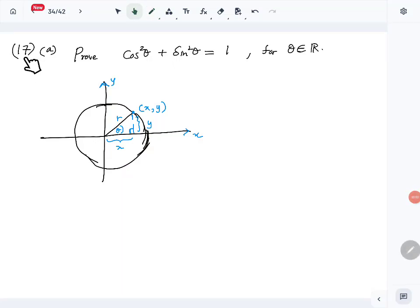Okay, now let's look at question number 17 part A. Question number 17 is the trigonometric question. The first part is to prove this identity: cos squared theta plus sin squared theta equals 1 for theta belongs to R. We are going to do that using a circle of radius r.